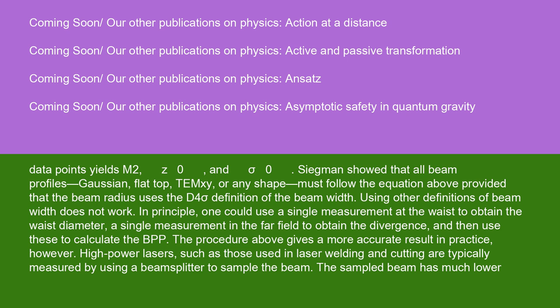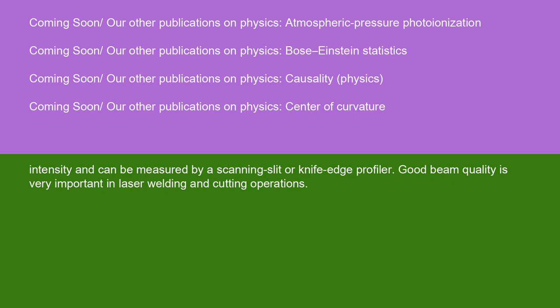High-power lasers, such as those used in laser welding and cutting, are typically measured by using a beam splitter to sample the beam. The sampled beam has much lower intensity and can be measured by a scanning slit or knife edge profiler. Good beam quality is very important in laser welding and cutting operations.